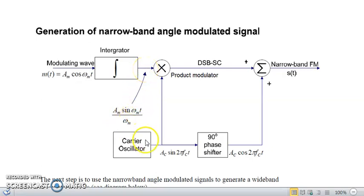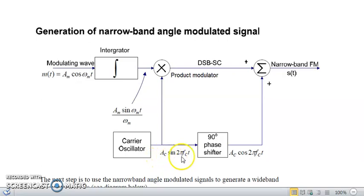The carrier frequency is generated from the carrier oscillator — an AC sine wave generator producing AC·sin(2π·FC·t). This carrier signal is then fed to two blocks: one is the product modulator and the other is the 90-degree phase shifter.